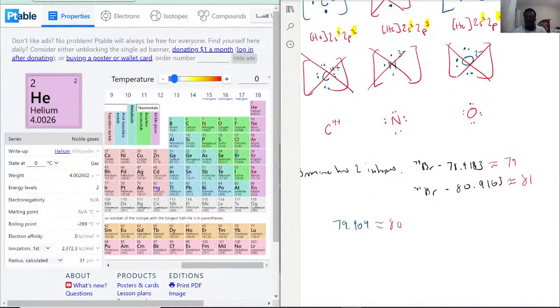I predict that without a calculator, what you should be getting is around 50% in regards to how much one of the isotopes would contribute to that weight.